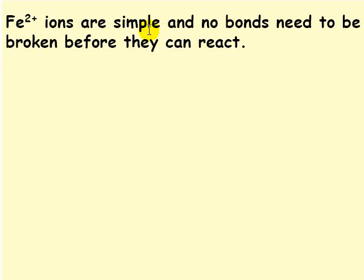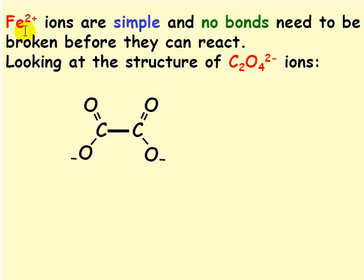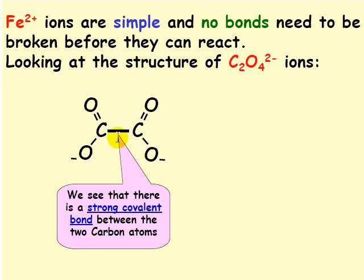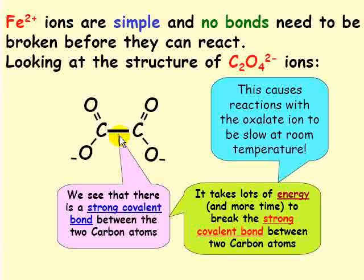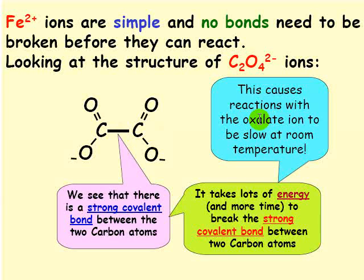Fe2+ ions are really simple and there's no bonds that need to be broken before they can react. So they're usually quite fast. If we look at the structure of the oxalate, the C2O4^2- ions, we see this. You'll notice between the two carbon atoms that there's a strong covalent bond. It takes a lot of energy to break this strong covalent bond between the two carbon atoms. A lot of energy and that results in taking more time. Since it takes more time, reactions with the oxalate ion tend to be quite slow at room temperature.